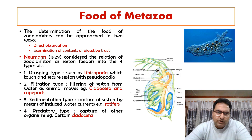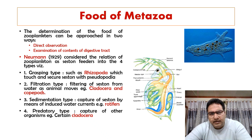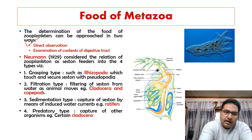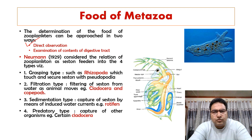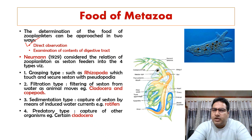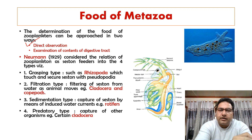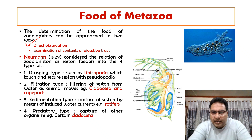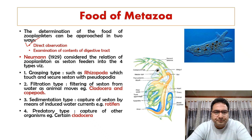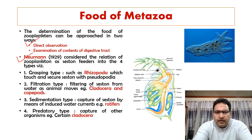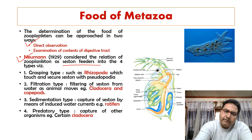We shall now be talking about the food of metazoa. The determination of food of zooplanktons can be approached in two ways: either by direct observation, or we can examine the contents of the digestive tract of the organism under the microscope to determine what they have been eating.